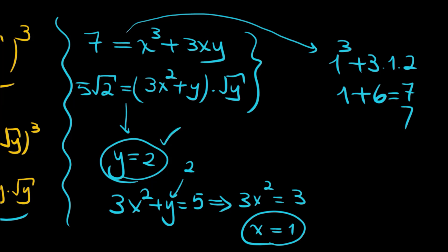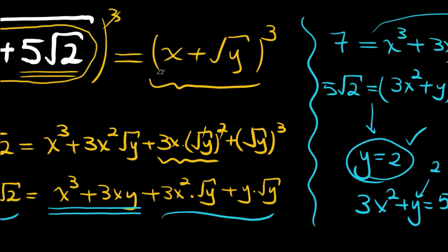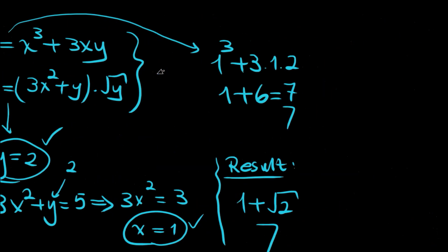Our result is, let's write the simplified version: 1 plus root 2. The cube root of 7 plus 5 times root 2 equals 1 plus root 2. Thank you for watching.